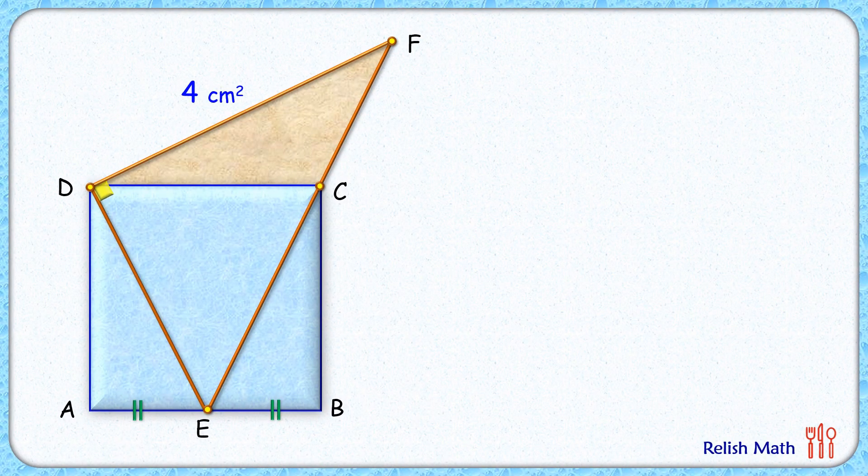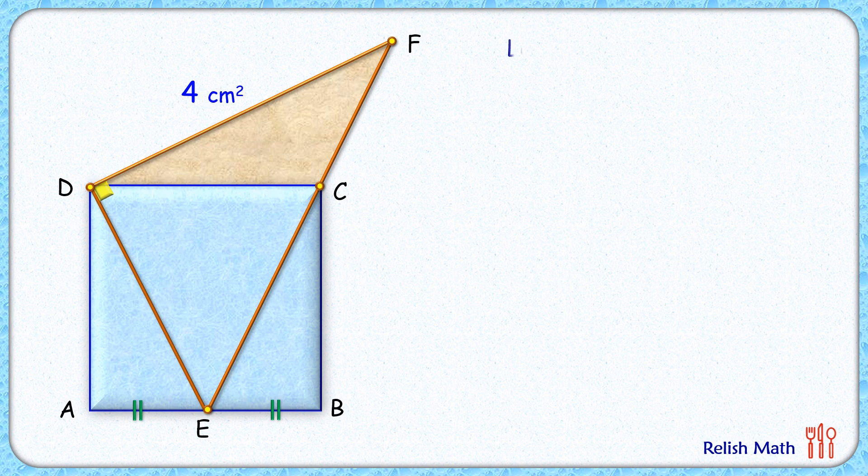Let's check the solution. Let's start by assuming the area of the square as 4x centimeter square. Thus, the area of triangle DEC, which has the same base and same height, will be 2x. By symmetricity, this will be x and this will be x. By symmetricity, DE length equals EC.